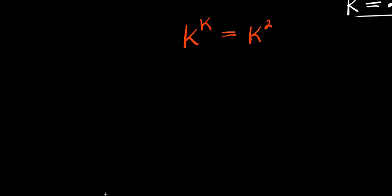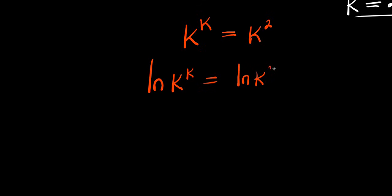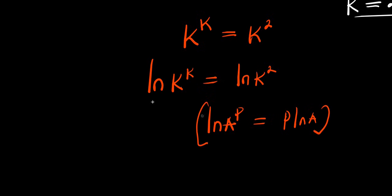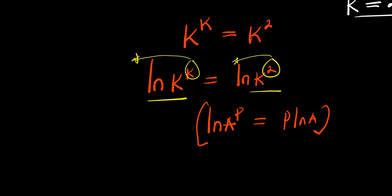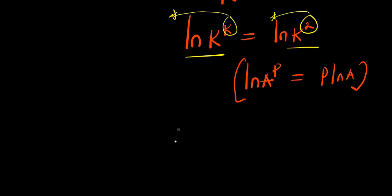I have k to the power of k equals k to the power of 2. In order to find all the values of k, I need to make use of natural log. I can start by taking the natural log of k^k equals natural log of k^2. Remember, natural log of a to the power of b equals b times natural log of a. Applying this identity, we get k times natural log of k equals 2 times natural log of k.